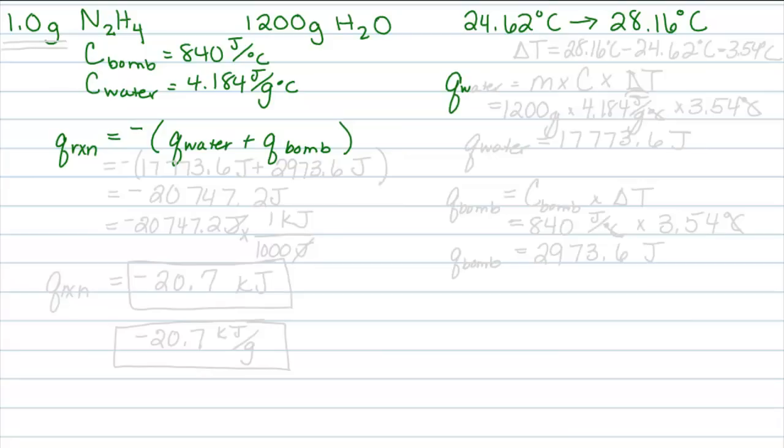To find the Q of the water, we will use our specific heat definition and the equation we learned earlier, M mass times C specific heat times delta T. The delta T is calculated from subtracting the final temperature from the initial temperature, which in this case is going to give us 3.54 degrees Celsius.